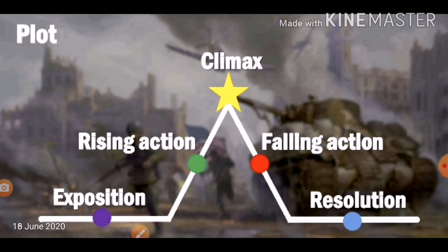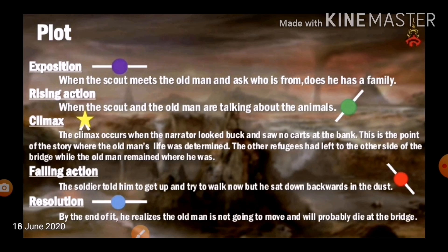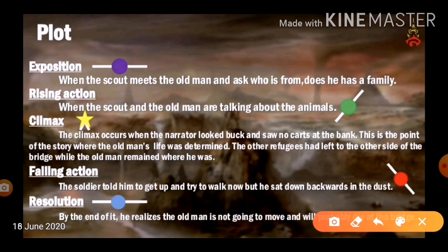The plot of the story is based on a triangular diagram with five stages: exposition, rising action, climax, falling action, and resolution. The exposition is when the scout meets the old man and asks who he is and whether he has family. The rising action occurs when the scout and the old man talk about the animals. The climax occurs when the narrator looks back and sees no carts at the bank — the other refugees have left while the old man remained.